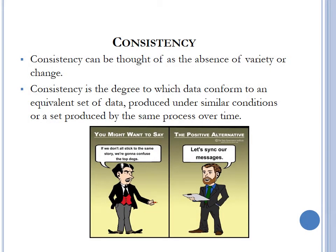Consistency can be thought of as the absence of variety or change. It is the degree to which data conforms to an equivalent set of data produced under similar conditions or by the same process over time. For example, if two individuals generate a sales report for a particular period, and the data is consistent, their reports should reflect the same figures. Similarly, if a client record is consistent, you should see in your systems the same name, same email address, and the same TRN numbers for that client.